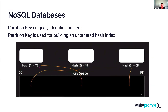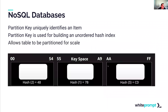NoSQL databases are built around a partition key that uniquely identifies an item and is used to build unordered hash indexes. Every NoSQL database has this mechanism — in DynamoDB it's called the partition key, in MongoDB it's called the shard key, and in Cassandra it's also called the partition key. This mechanism partitions the storage space and allows those partitions to be stored in different nodes, enabling horizontal scaling that is fast and consistent at any scale.